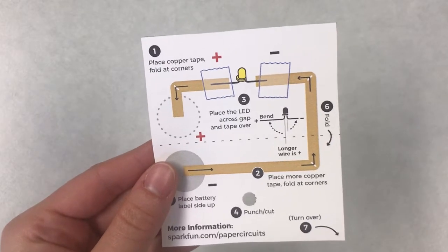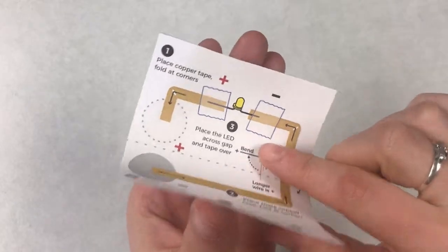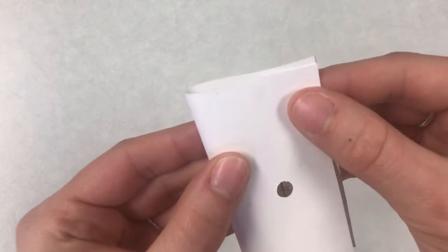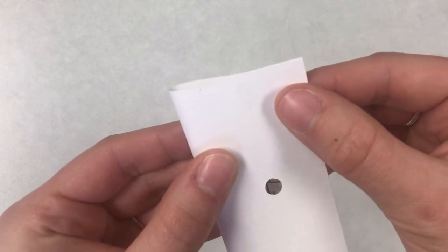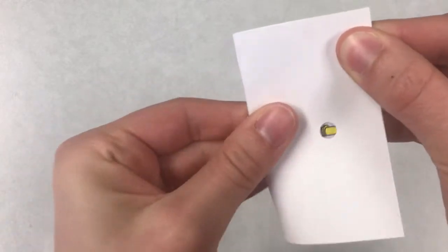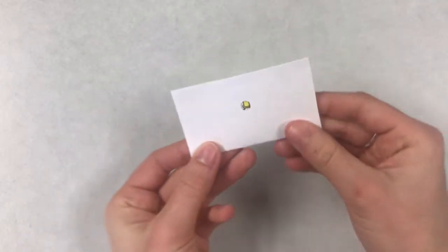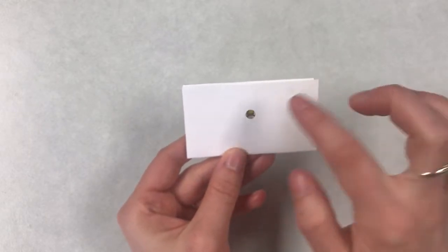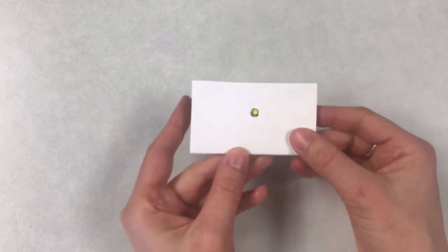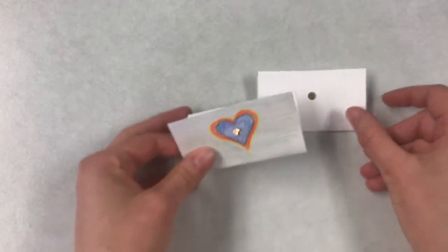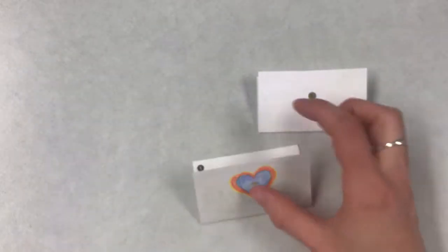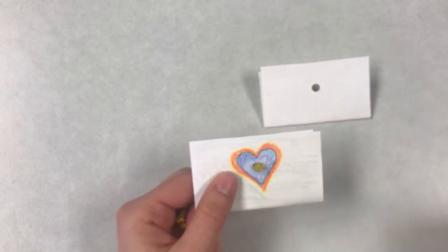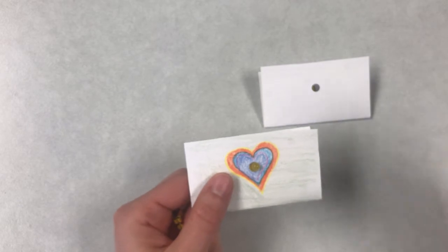The first thing that you want to do is fold your card in half along this little dotted line here. You're going to create your drawing on this side of your card, and the hole is where your light bulb is going to shine through. Let's take a look at this one that I already made. I drew a heart, and now my light bulb is poking through on that side.